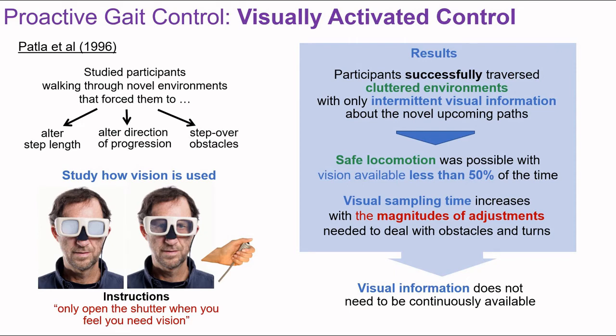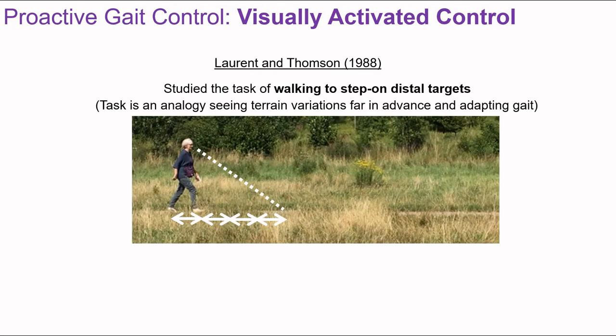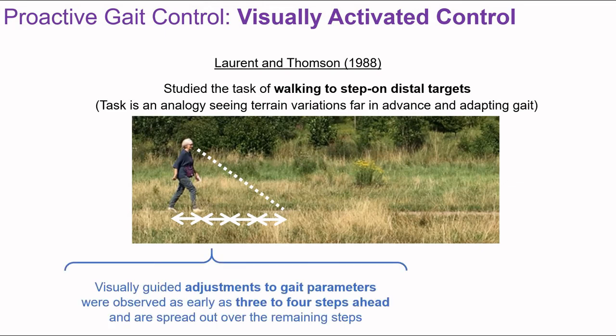The main takeaway is that vision has a highly specific role in the control of locomotion — vision is only needed at certain times. Participants needed to open the shutter goggles for longer periods when bigger gait adjustments were needed, such as when adapting to obstacles or making turns. Laurent and Thompson studied a task where participants had to adapt their walking to step on targets on the ground, analogous to dealing with upcoming terrain variations. Visually guided adjustments to gait parameters were observed as early as three to four steps ahead, spread out over the remaining steps.